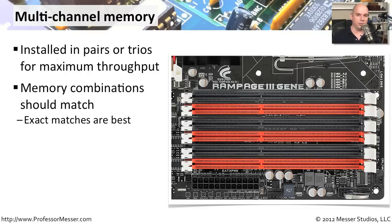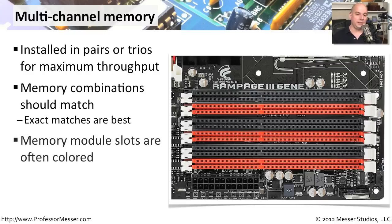If we had three memory modules, we would try to find three that were exactly the same and put them into the colored slots that matched. We wouldn't put them in the top three. We would try to put them in so we can maximize the memory bus. We'll see these colors very often with multi-channel memory, and that should be your cue to install memory in pairs or trios depending on what the motherboard requires.